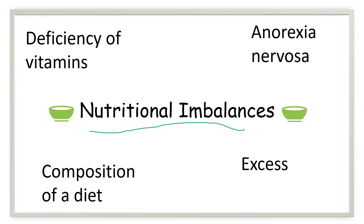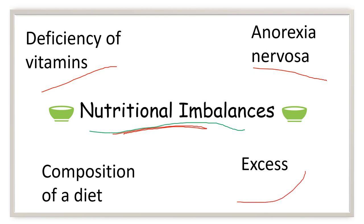Finally, we have nutritional imbalances as a cause of cell injury. This could be due to inadequate nutrition intake like vitamin deficiencies, or self-induced starvation like anorexia nervosa. Excess fatty food leads to increased cholesterol and atherosclerosis, which can lead to myocardial infarction or gangrene. Even the composition of a diet can cause injury and disease.